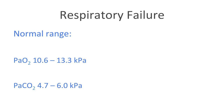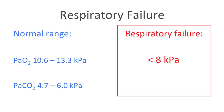The normal values for the arterial partial pressures of oxygen and carbon dioxide are displayed here. Hypoxemia can be defined as a PaO2 less than 10.6 kilopascals, and hypercapnia as a PaCO2 greater than 6 kilopascals. Respiratory failure, however, can be defined as a PaO2 less than 8 kilopascals, and since CO2 is dependent on ventilation, a CO2 greater than 6.7 kilopascals may also define respiratory failure.